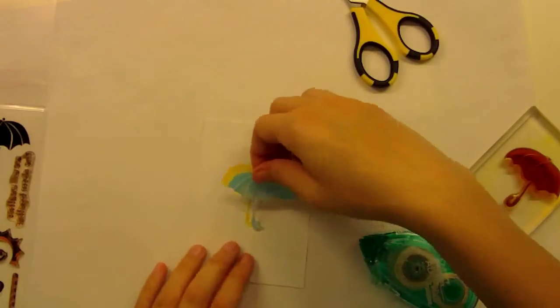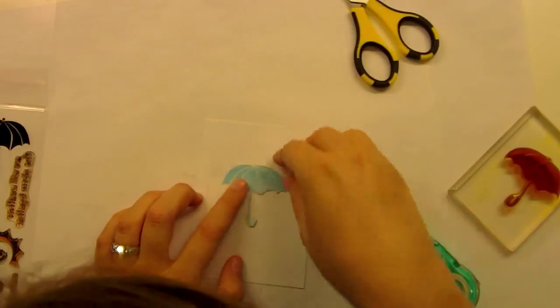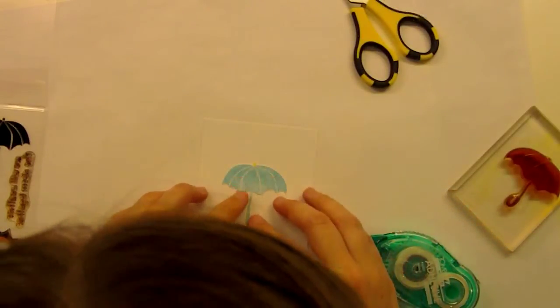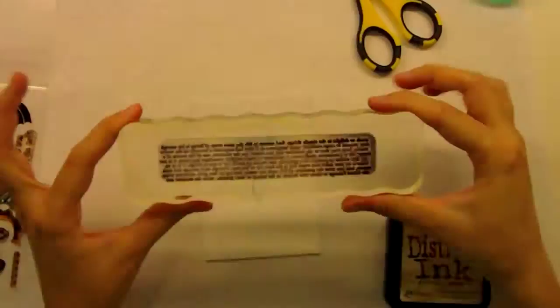I'm just putting some removable adhesive on the back of my mask that I just made and then putting it on this panel that we stamped the sunflower colored umbrella on, just making sure that it all lines up.